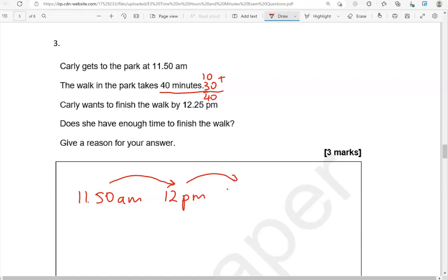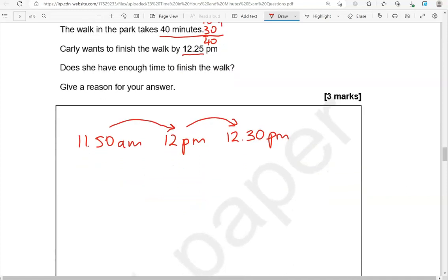So if I add 30 minutes now, this becomes 12:30 PM. Carly wants to finish the walk by 12:25 PM. Does she have enough time to finish the walk? No, because this is five minutes later.